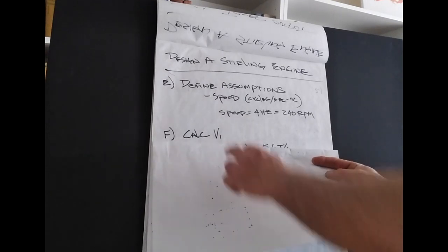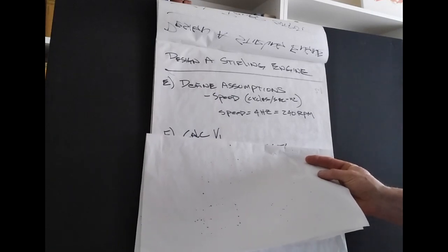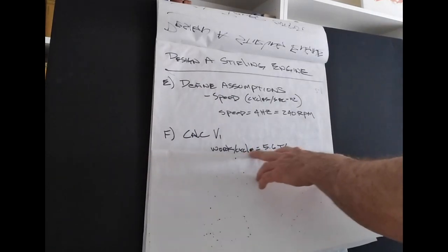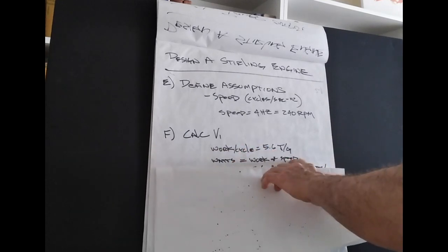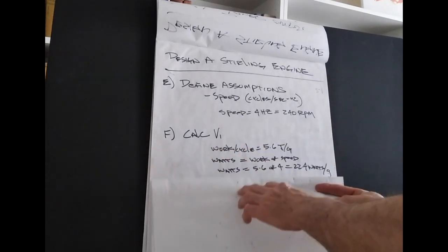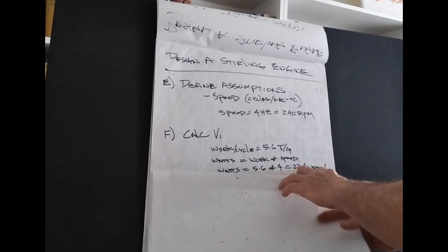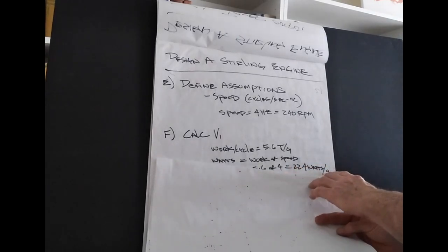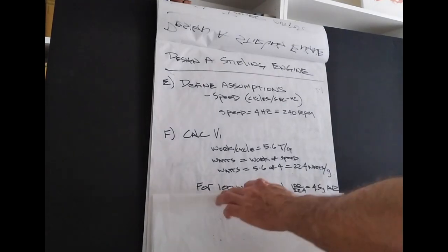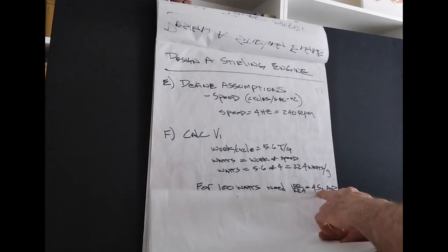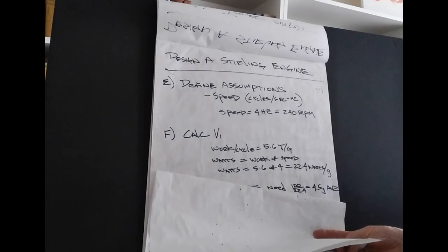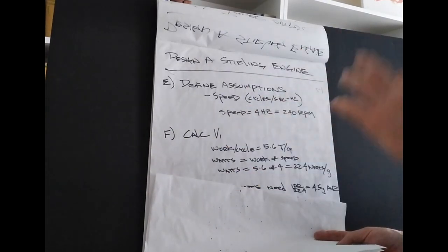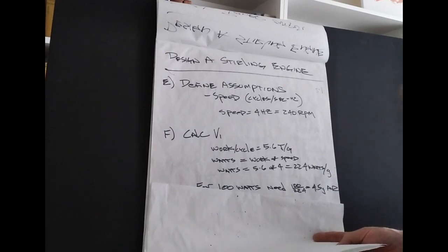The size of the engine, what I mean by the size of the engine is the V1, the volume of the working fluid of the engine. And if I take my work per cycle, 5.6 joules per gram, and I take my watts, which is going to be the work per cycle times the speed times the number of cycles per second, I will get 22.4 watts per gram of working fluid, in this case air. Now we want 100 watts. So we'll go ahead and basically multiply that times 4.5 to get 100 watts. So we're going to need 4.5 grams of air to work with at these temperatures, at this compression ratio, to develop this engine.